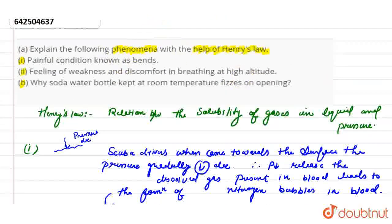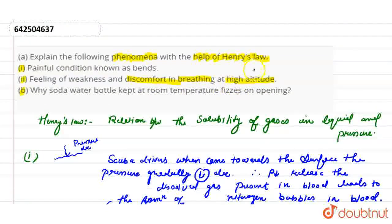The second question: the feeling of weakness and discomfort in breathing at high altitude. As we move to high altitude, we feel discomfort in breathing because at high altitude the atmospheric pressure is quite low compared to the surface. So breathing becomes difficult, and hence we feel weakness and discomfort while breathing. This is Henry's Law application.